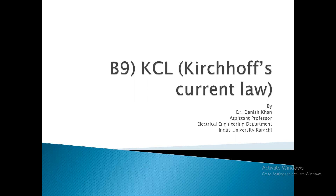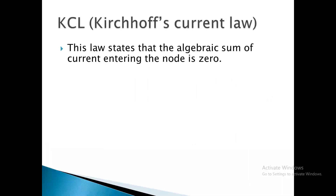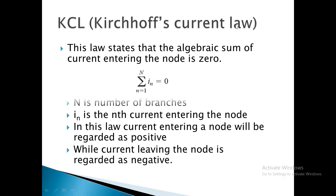In KCL we have a statement that the algebraic sum of current entering the node is equal to zero. We can show this as an equation where n is the number of branches connected to the node. The sum of current entering the node is equal to zero.